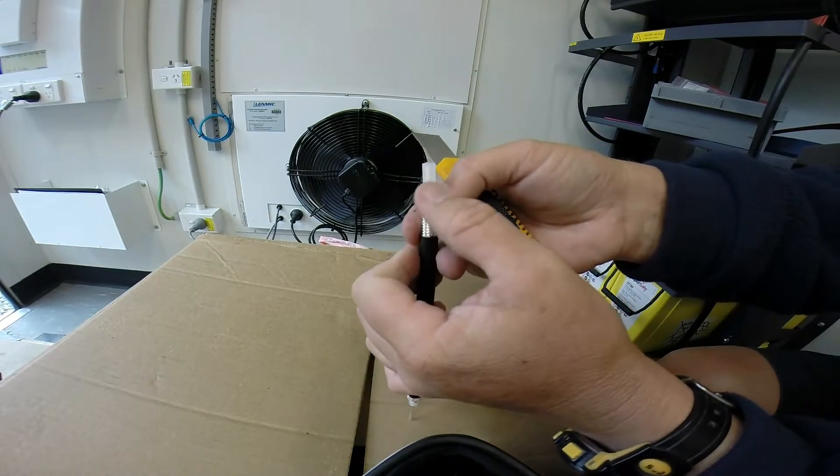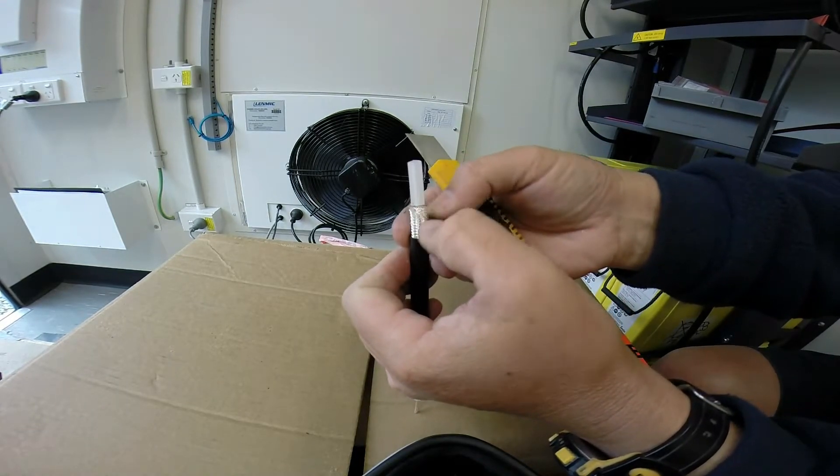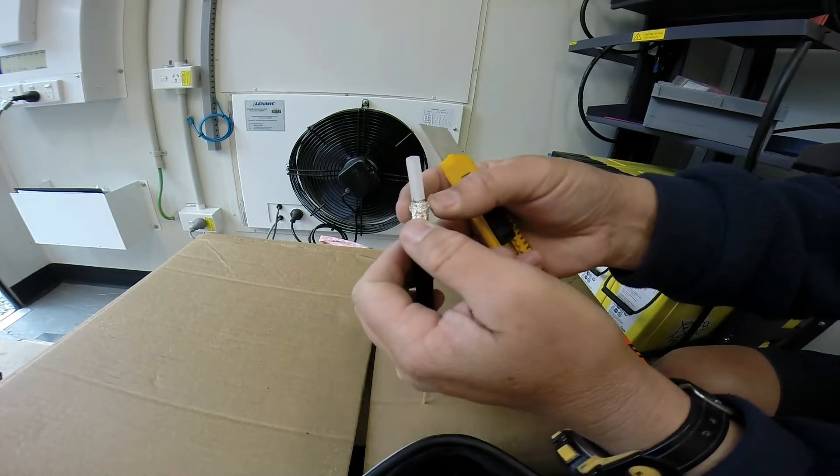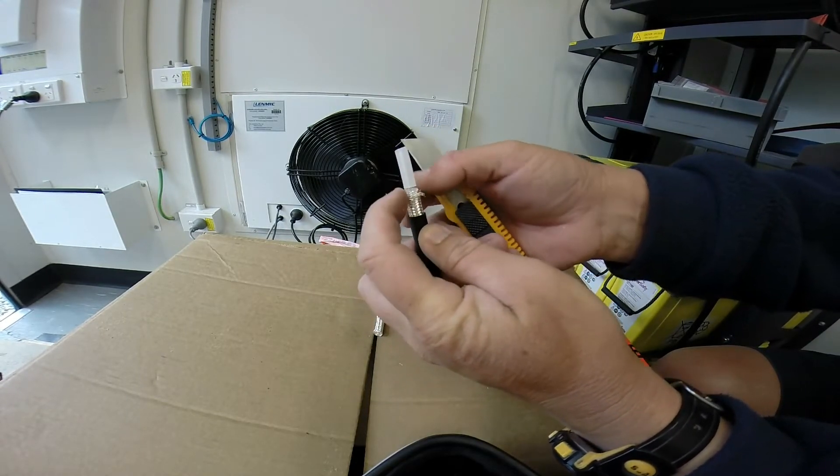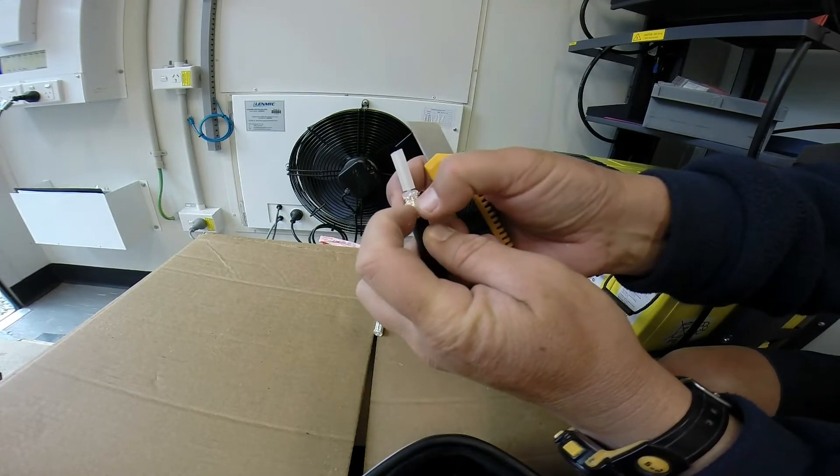Now on RG213 you can just fold the braid jacket back, but on RG214 you can see we've got double braid, silver plated, so it's a bit of a pain in the butt.